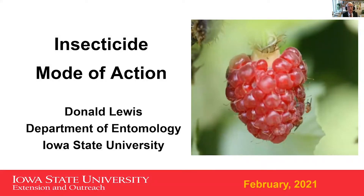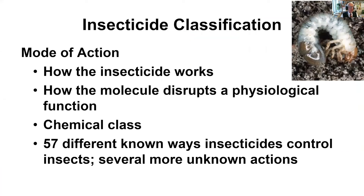The insecticide mode of action will be important to you as you prepare to spray insecticides and miticides in your orchard, vineyard, or fruit production area in the coming year. The insecticide mode of action refers to how an insecticide works. You are applying molecules of insecticide in your spray solution, and when those molecules are inside the insect, what happens? How do those molecules of chemical disrupt the physiology and the function of the insect?